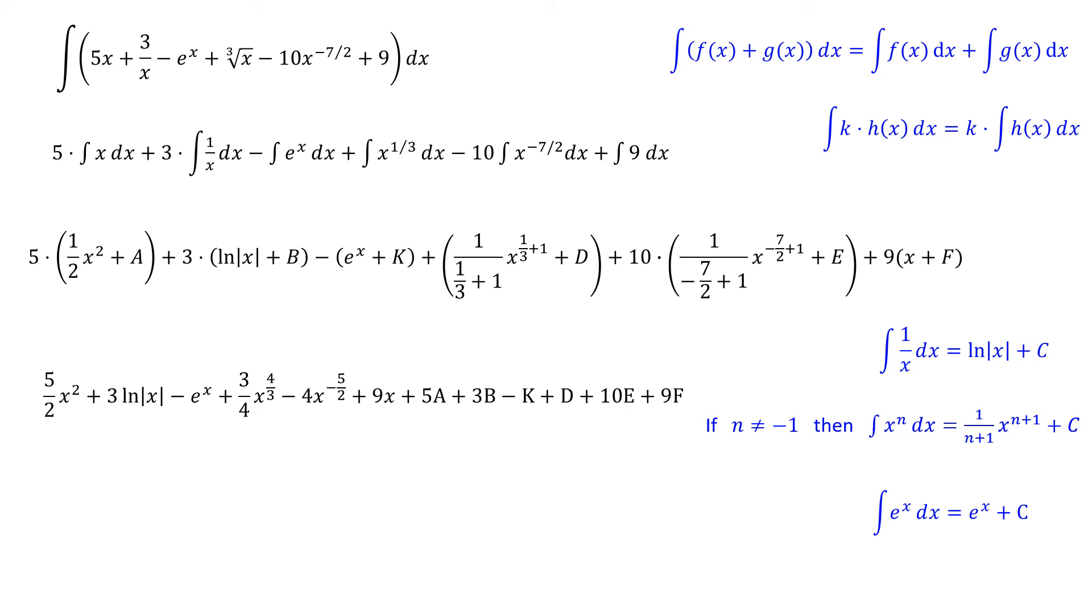The thing that is worth noticing here is that the so-called constant of integration - I used a different letter for each one of the six different integrals here because each of the constants could be different. And when I collected all those constants at the very end of this, you'll notice where it says 5a plus 3b minus k and so on, is that I collected all those constants together and simply wrote them as plus C, meaning that the sum of all those constants would just itself be some other constant.